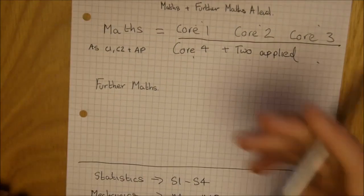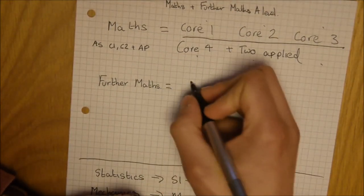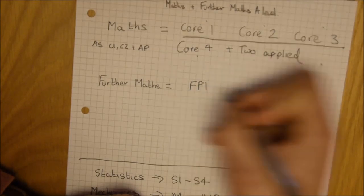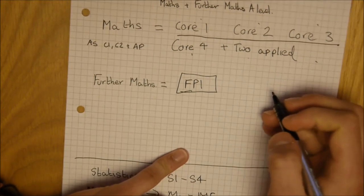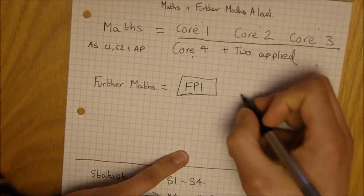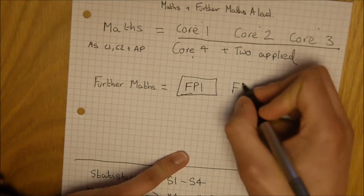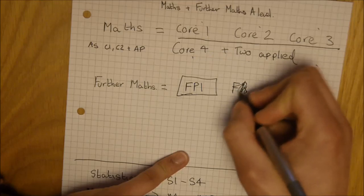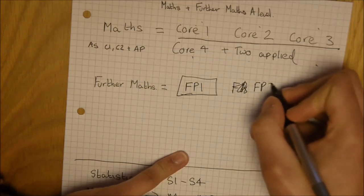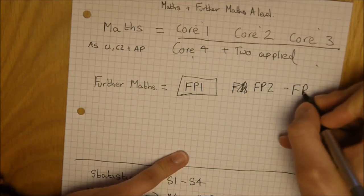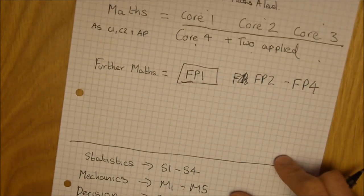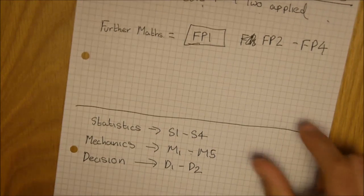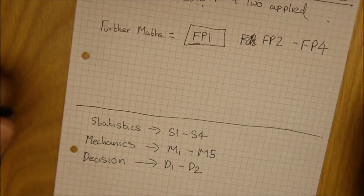Now we'll move on to further maths, which is made up of FP1, which you must take for your AS. That is a compulsory module. Then there is FP2 to FP4, and also the stats, mechanics, and decisions that we've talked about.